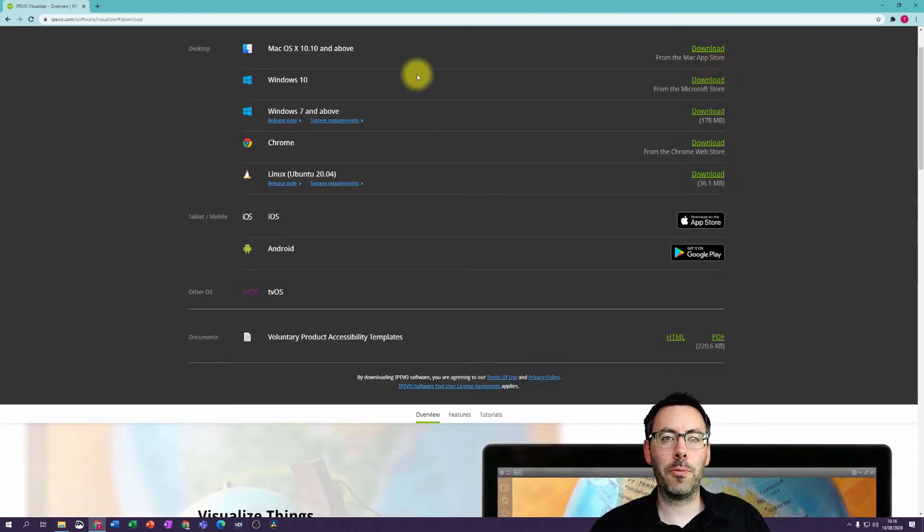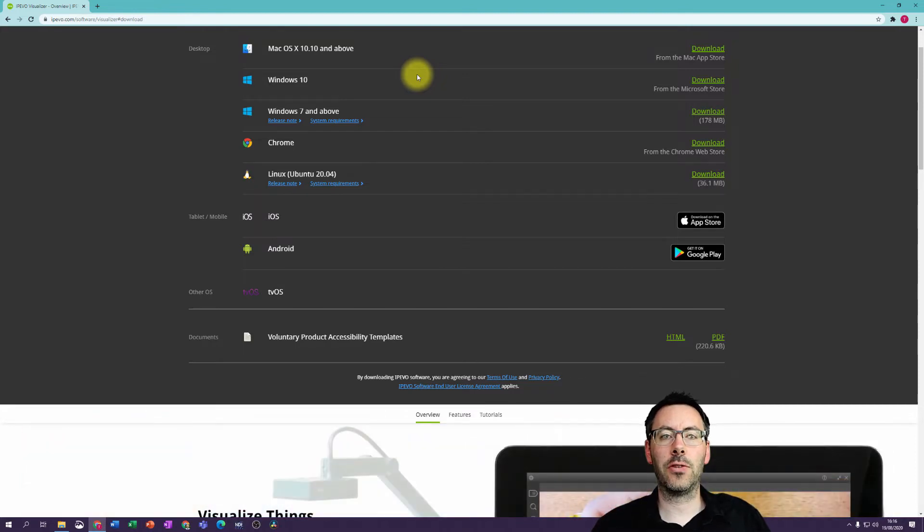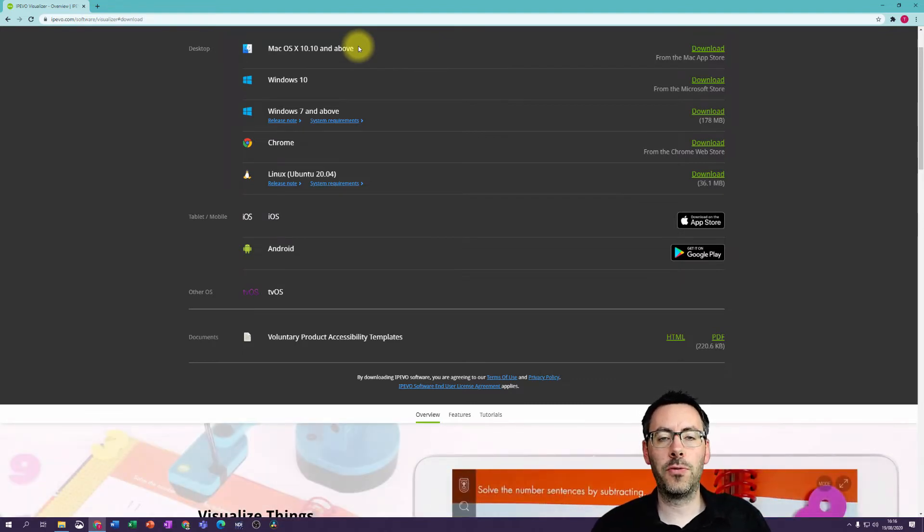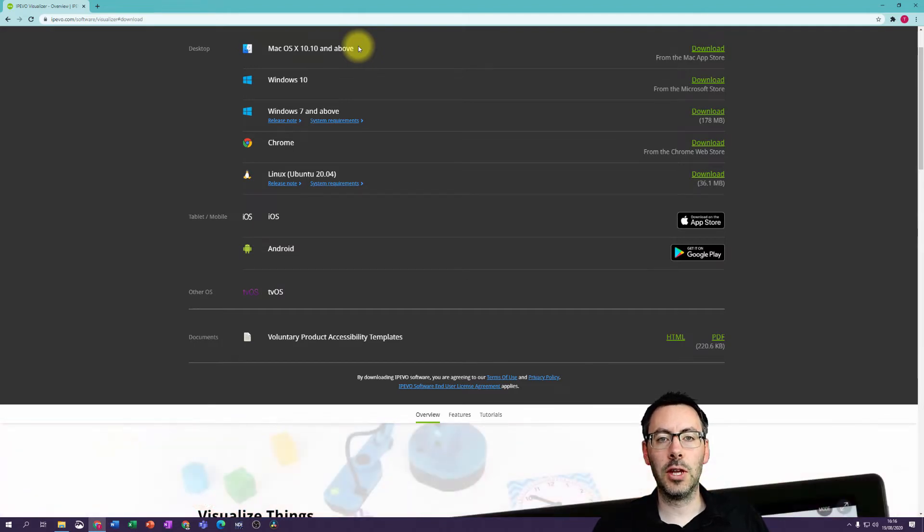This software is available for Mac, Windows, Chrome, Linux, iOS, Android, and Apple TV OS. The main desktop operating systems, Mac and Windows, have the most features. But the software is very similar whether you're using it on a phone, tablet, or computer, so all of the things I'm going to show you will be applicable to those devices where they appear.